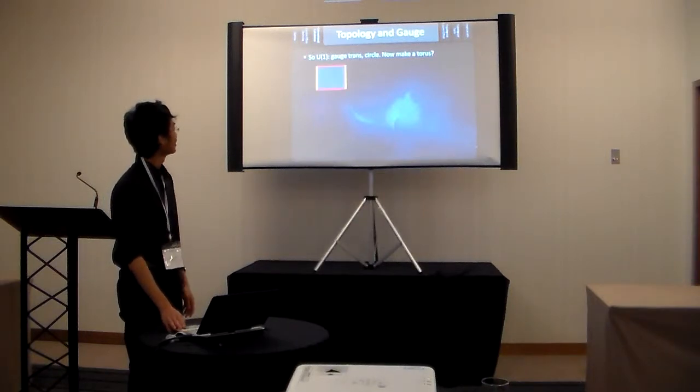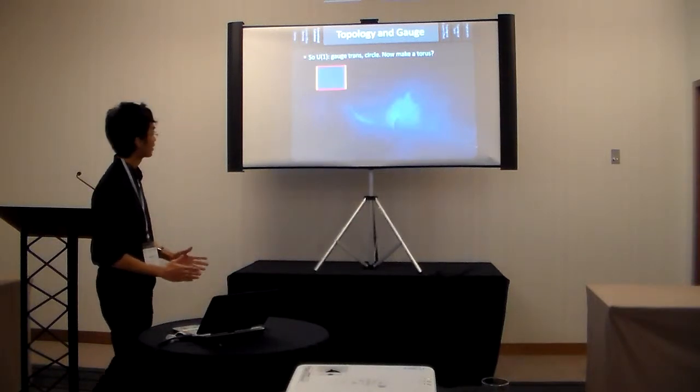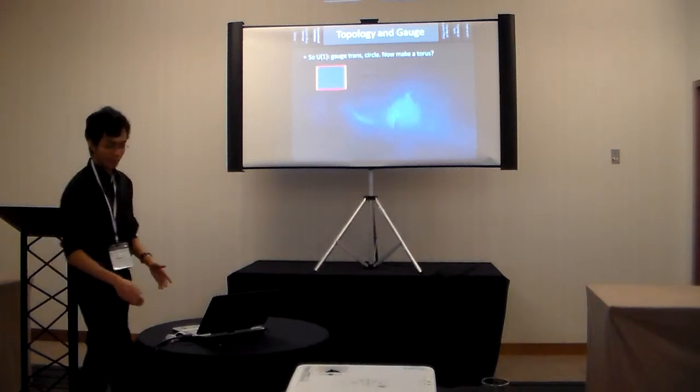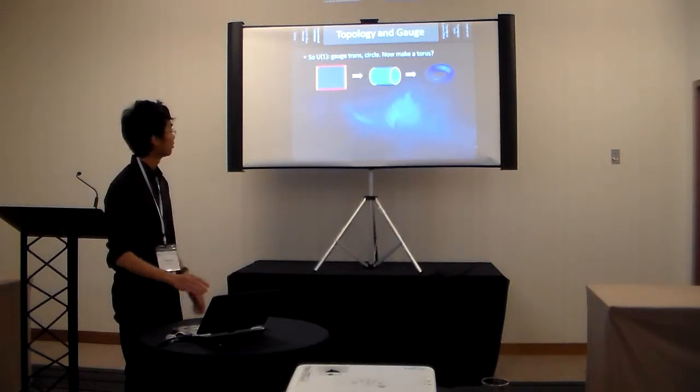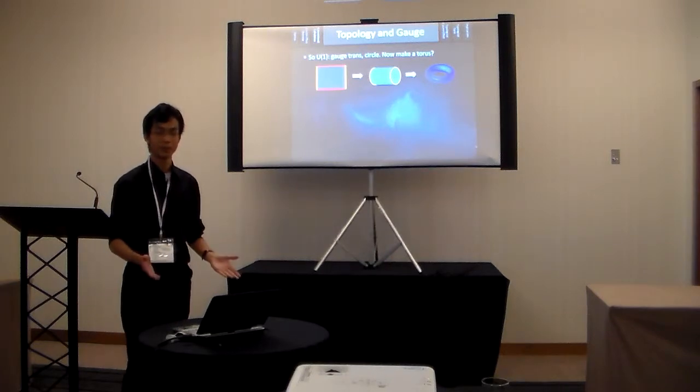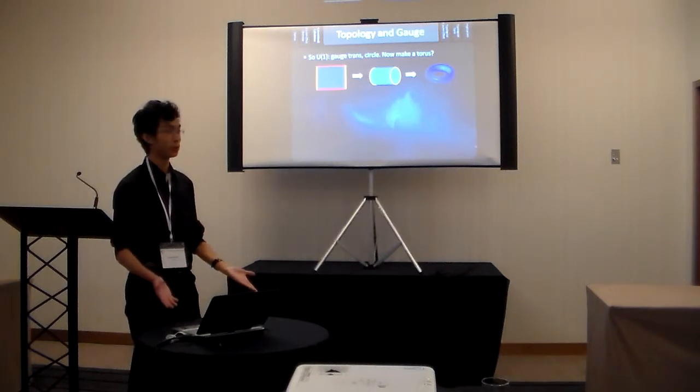So we talk about U1 gauge in circle. Now, let's make a torus. So what is a torus? In two dimensions, we take a rectangle, and then let's glue the red sides together to form a cylinder. Then we glue the yellow sides together to form a donut-shaped thing that we call a two-torus.